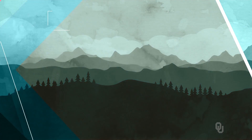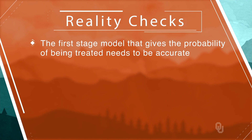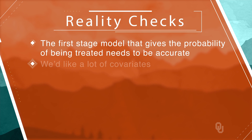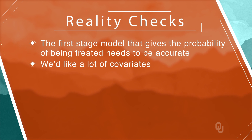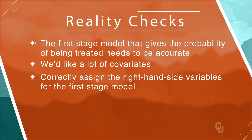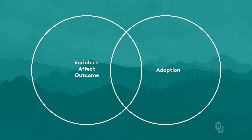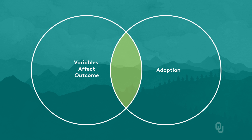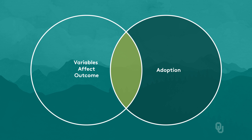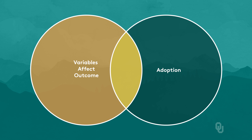Let's talk about how to investigate if our matching model is a good one. First, we need the first stage of the model that gives the probability of being treated to be accurate. Typically, we'd like a lot of covariates so we can match on a lot of details. It is important to correctly assign the right-hand side variables of the first stage model. Many studies employing propensity score matching include as predictors only variables that simultaneously affect both policy adoption and the outcome variable. Others only control for the determinants of policy adoption.